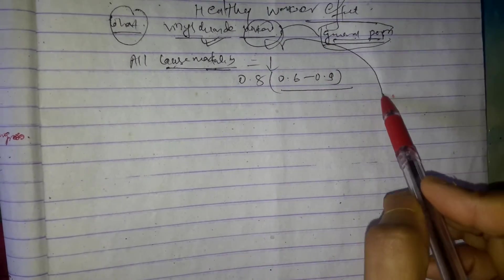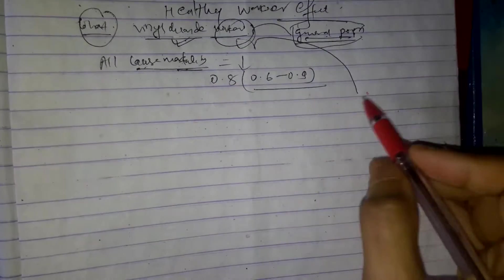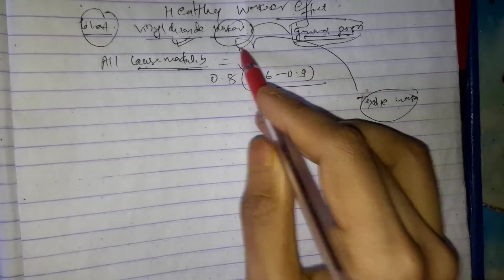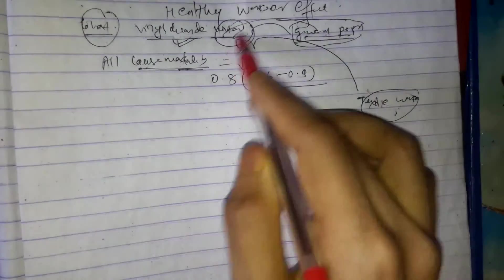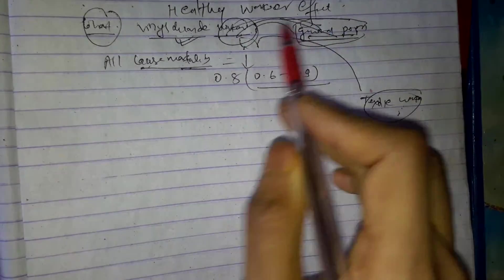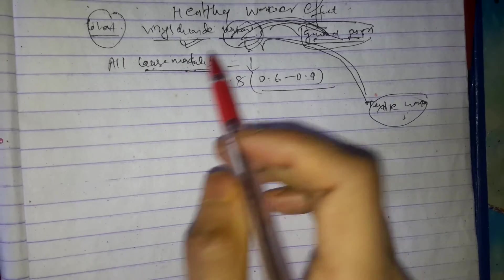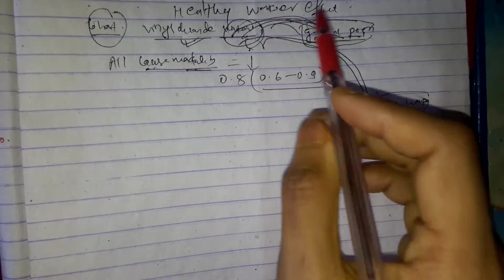Should these workers be compared with another workers, let's say textile workers? Would you compare with these people or would you compare with general population? What if we compare with general population and what if we compare with the textile worker? What will happen? What will change?